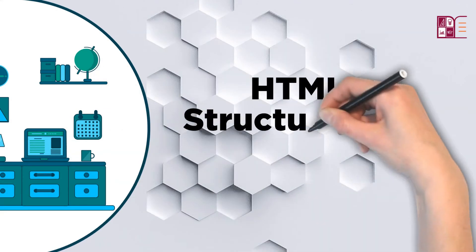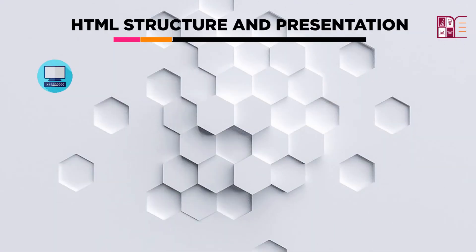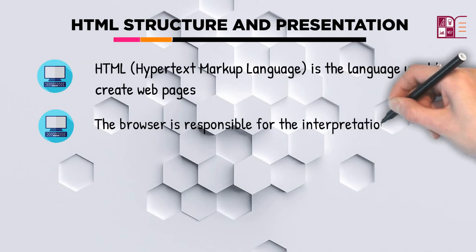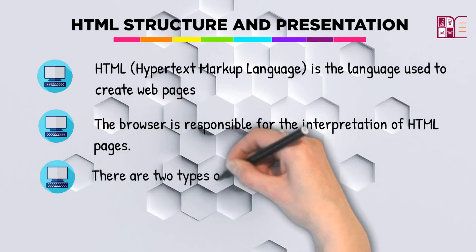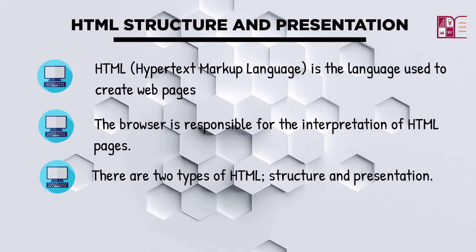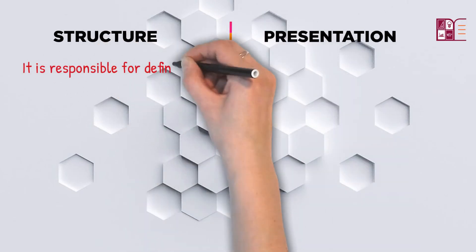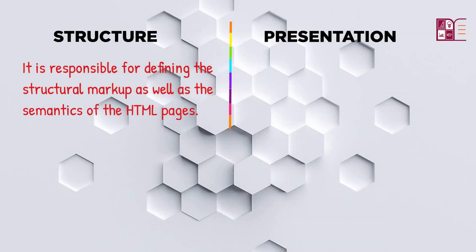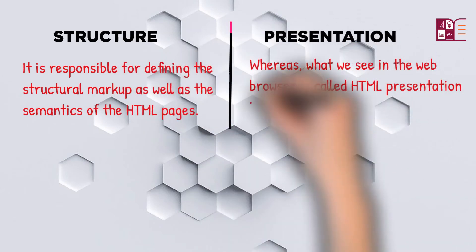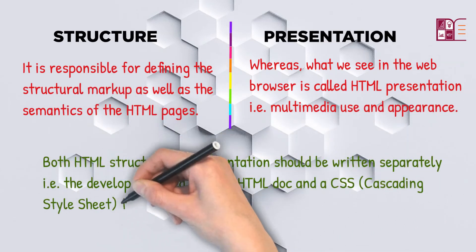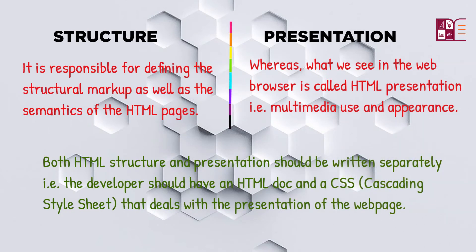HTML structure and presentation: HTML is the language used to create web pages. The browser is responsible for the interpretation of HTML pages. There are two types of HTML: structure and presentation. HTML structure is responsible for defining the structural markup as well as the semantics of HTML pages, whereas what we see in the web browser is called HTML presentation — that is, multimedia use and appearance. HTML presentation is also known as style. Both HTML structure and presentation should be written separately, meaning a developer should have an HTML document and a CSS file.